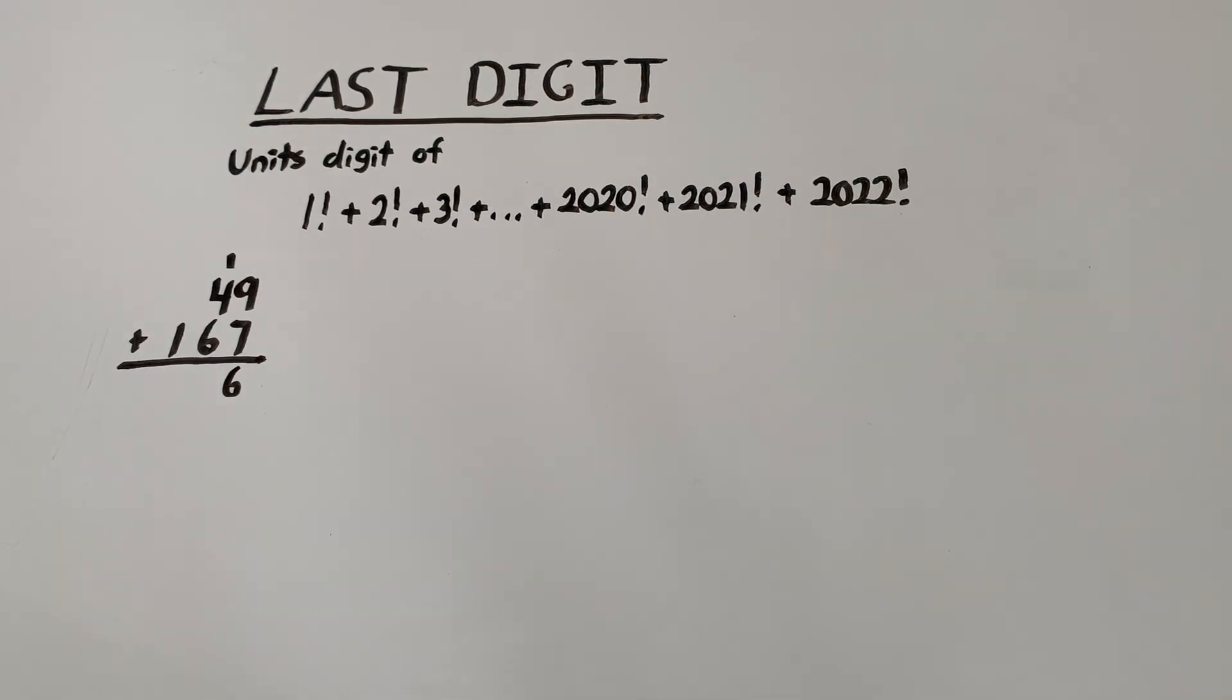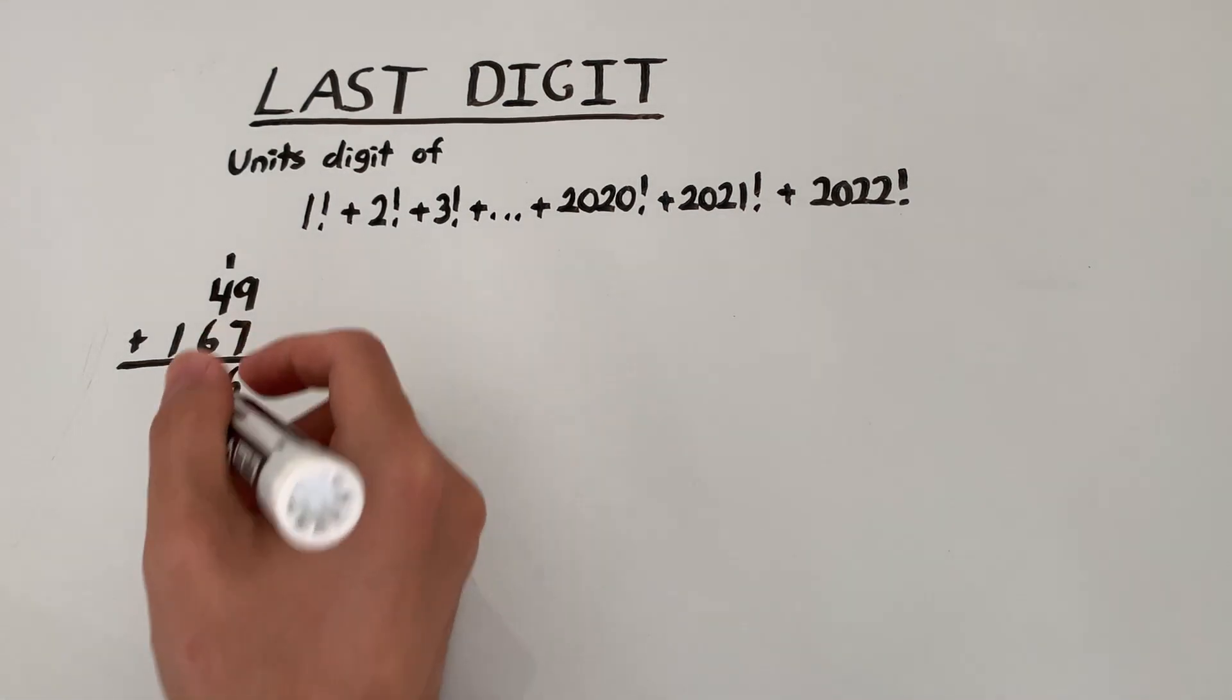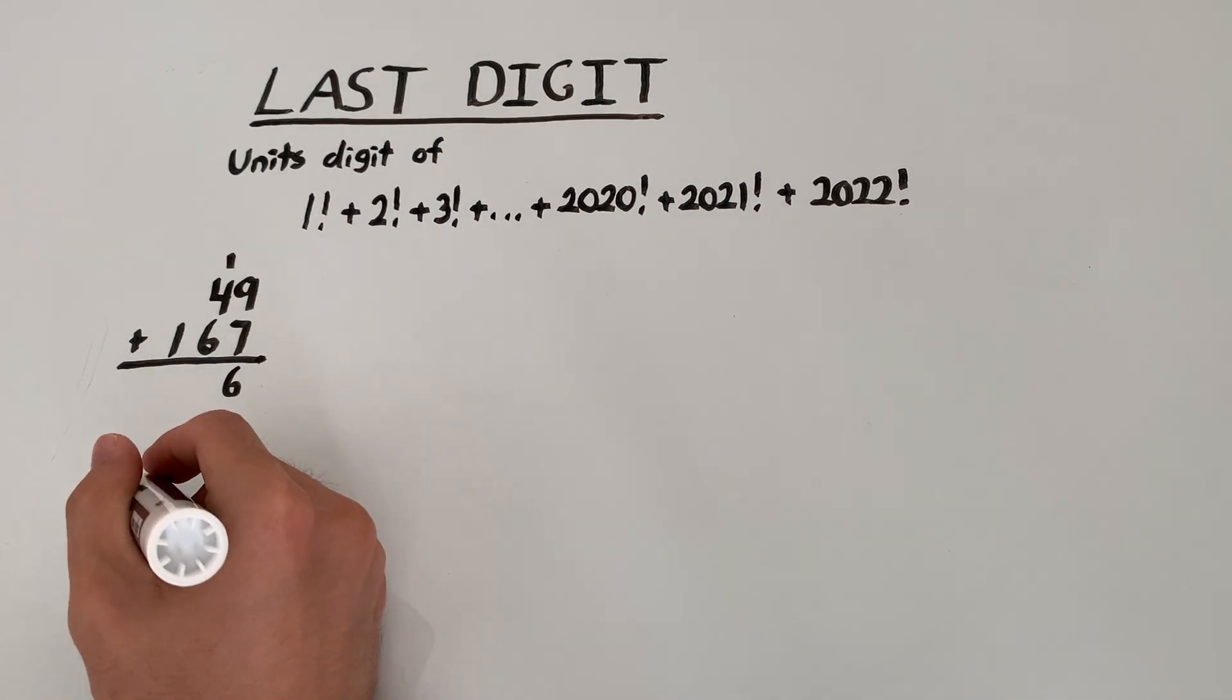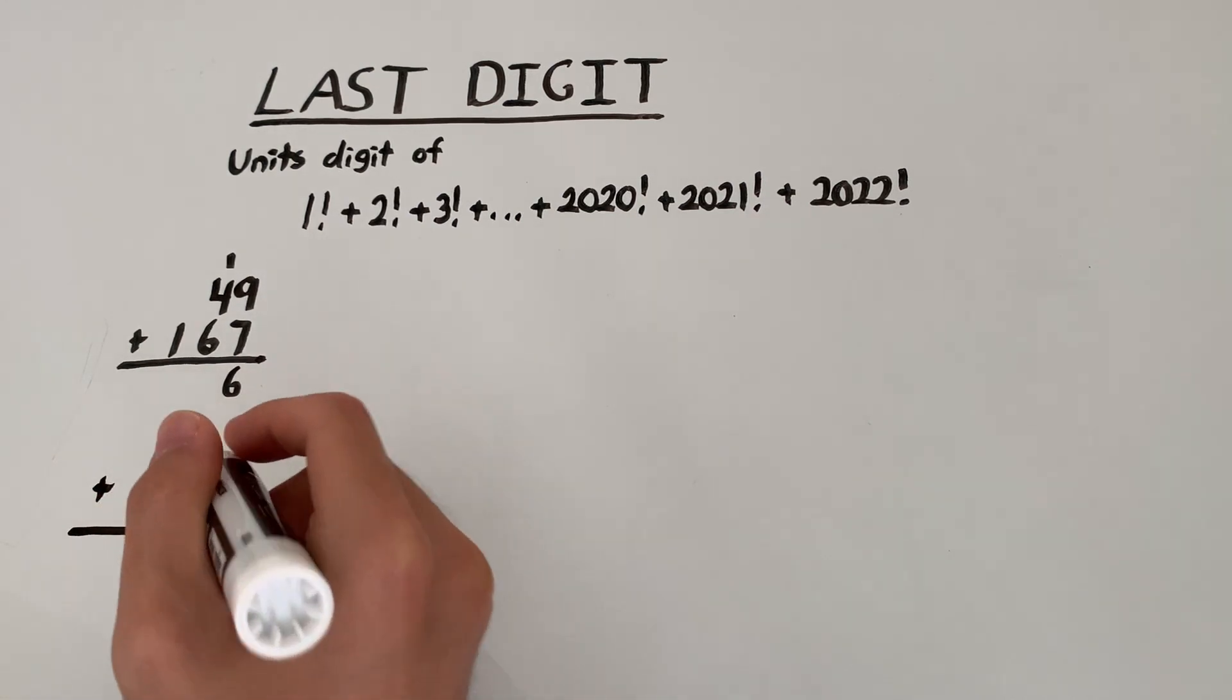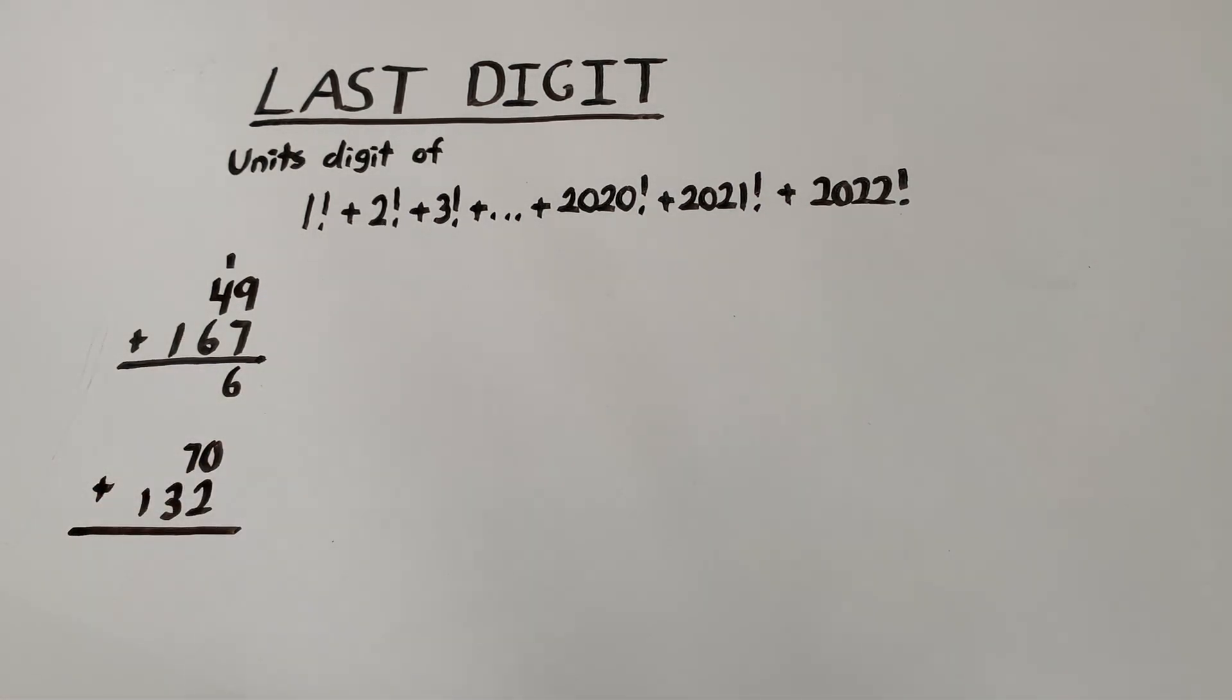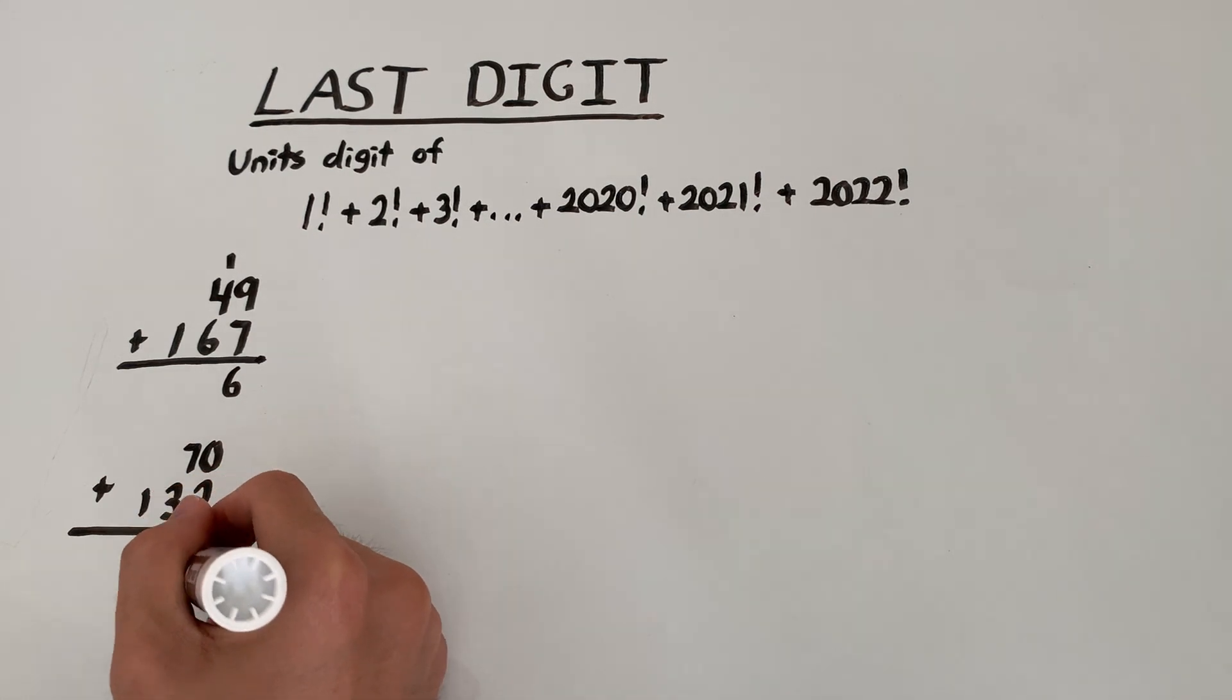Let's try another example. Let's say we have 70 and 132. From here, the units digit is just going to be 0 plus 2, which ends up being 2.